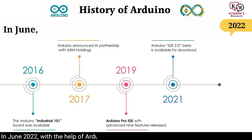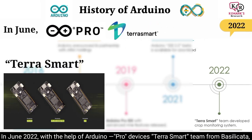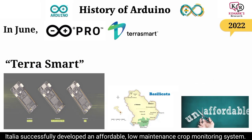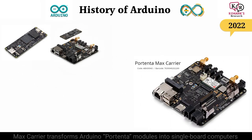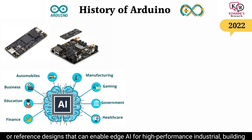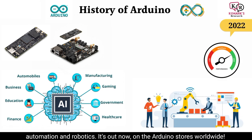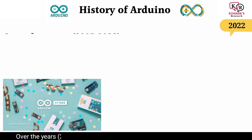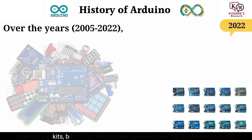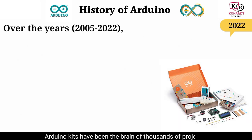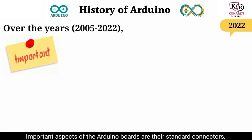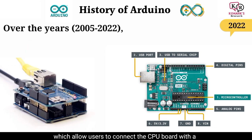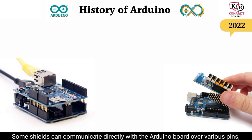In June 2022, with the help of Arduino Pro devices, the Terra Smart team from Basilicata, Italy successfully developed an affordable, low-maintenance crop monitoring system. The Max Carrier transforms Arduino Portenta modules into single-board computers or reference designs that can enable edge artificial intelligence for high-performance industrial, building automation, and robotics applications — now available on Arduino stores worldwide. Over the years, Arduino has released over 100 hardware products including kits, boards, shields, carriers, and other accessories. Arduino kits have been the brain of thousands of projects, from everyday objects to complex scientific instruments. An important aspect of Arduino boards are their standard connectors, which allow users to connect the CPU board with a variety of interchangeable add-on modules called shields.